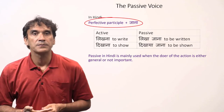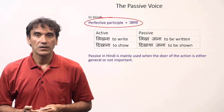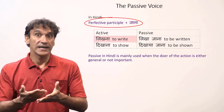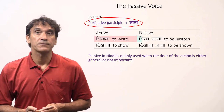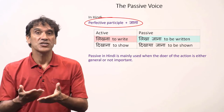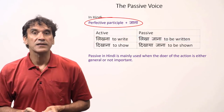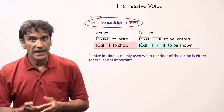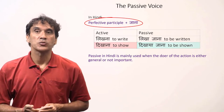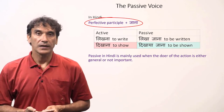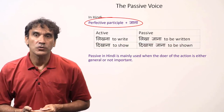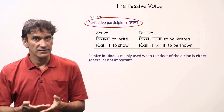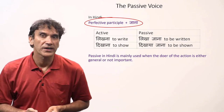In Hindi, the passive voice is made with the perfective participle and the verb 'jana.' For example, the active verb 'likhna' means to write, and the passive would be 'likha jana,' meaning to be written. Similarly, 'dikhana' is to show and 'dikhaya jana' is to be shown. Passive in Hindi is rarely used and is mainly used when the doer of an action is either general or not important.